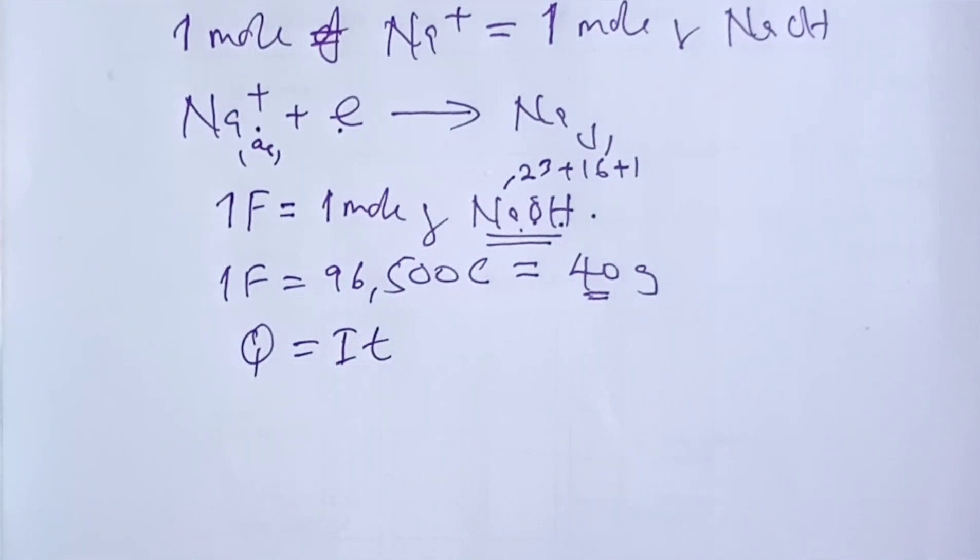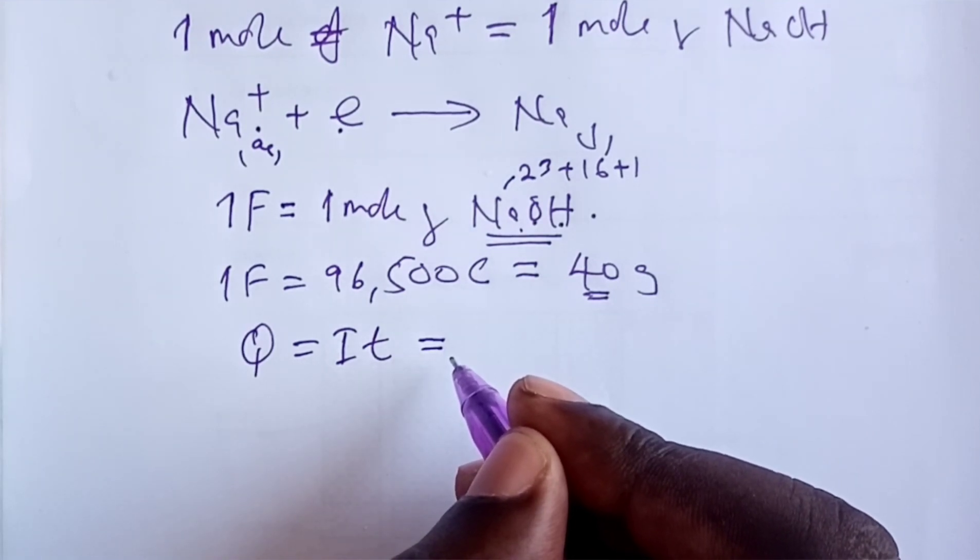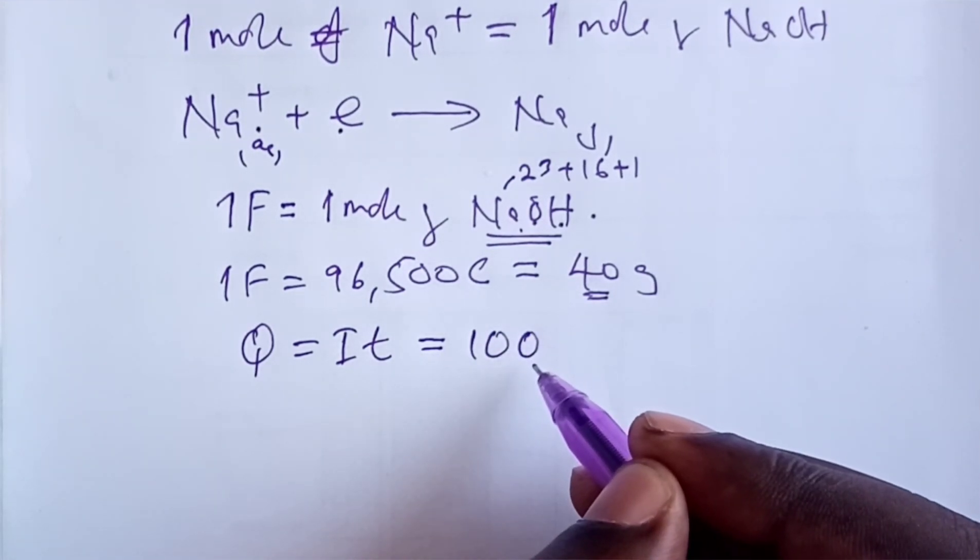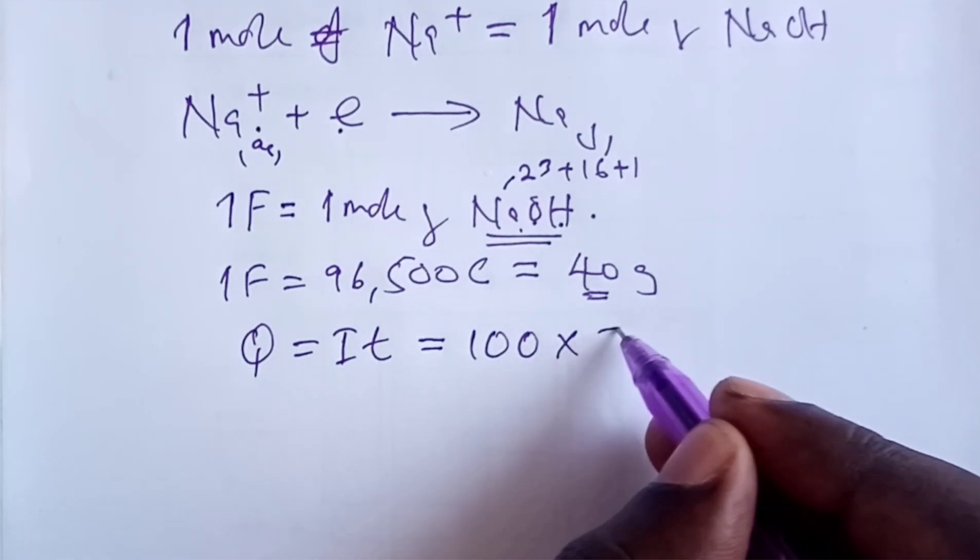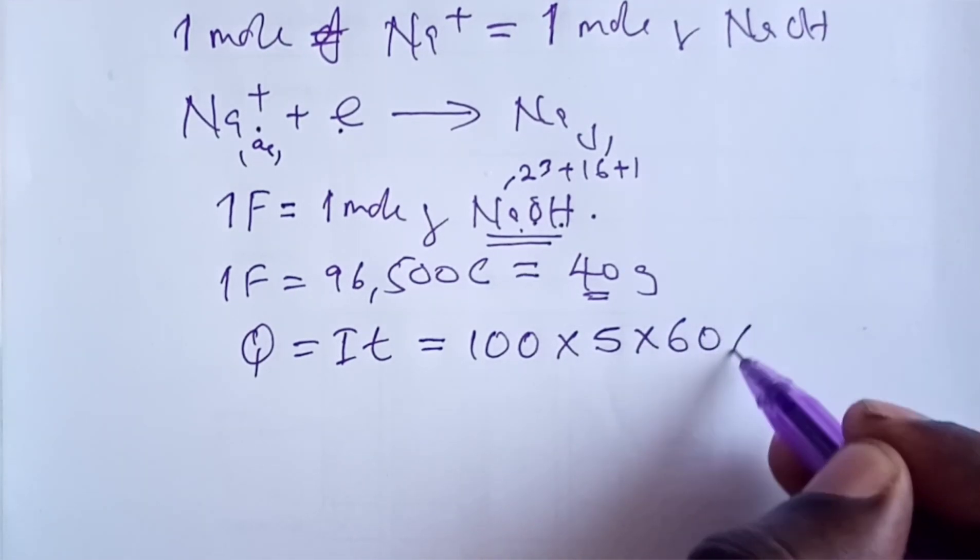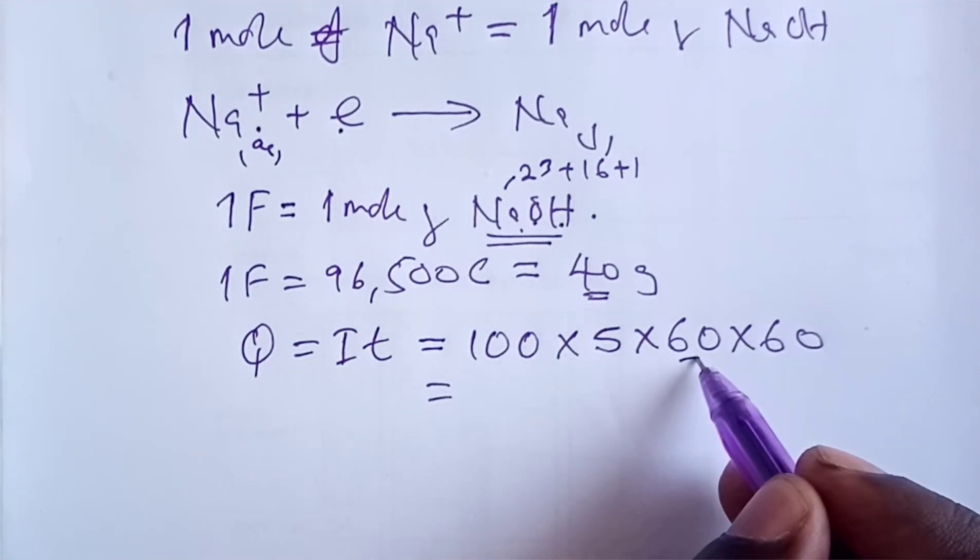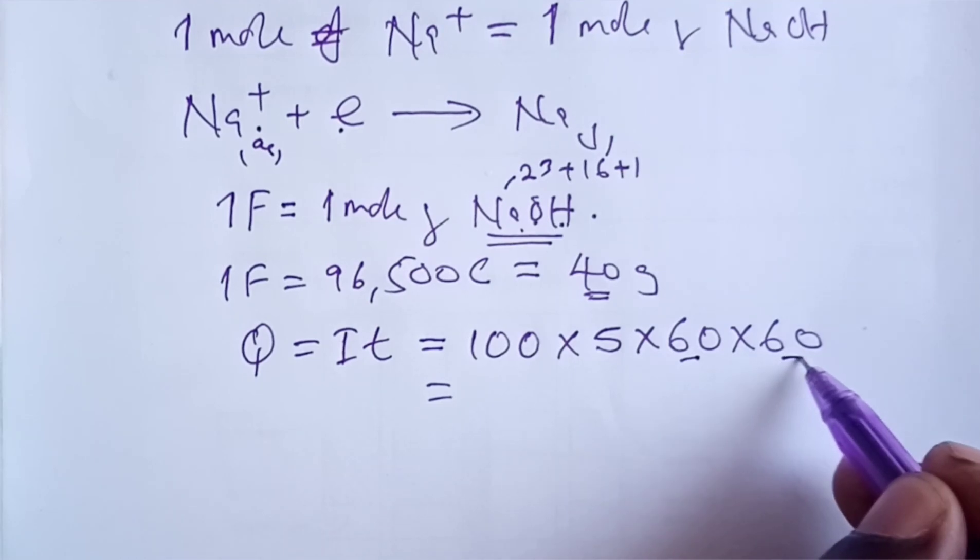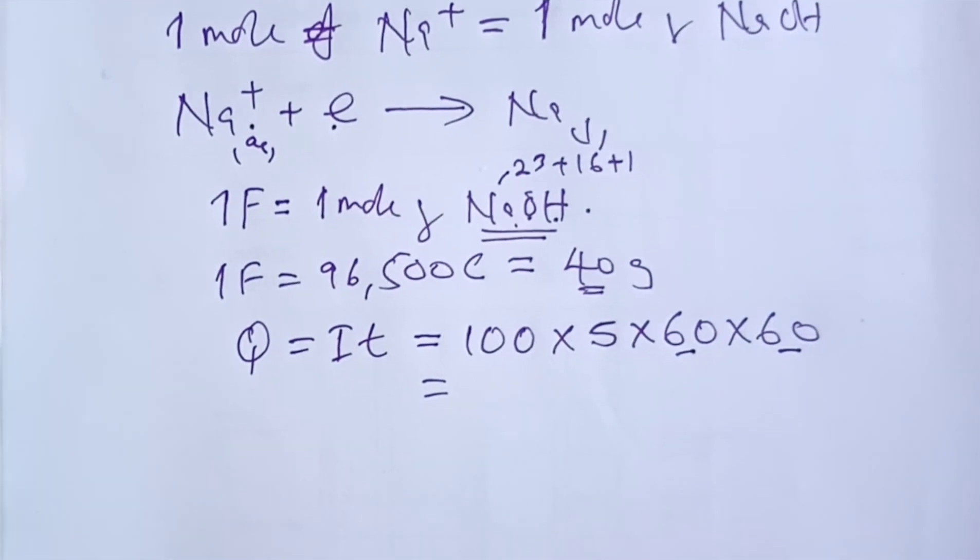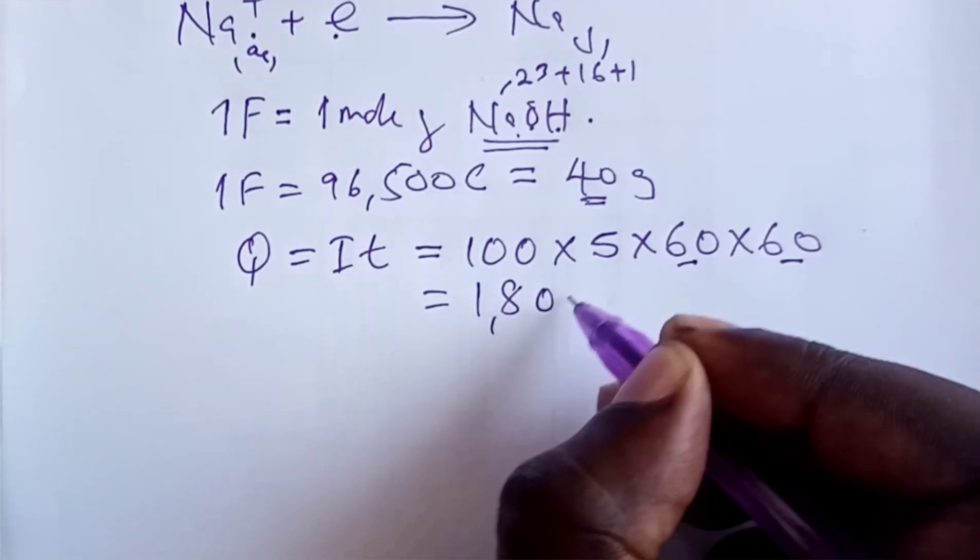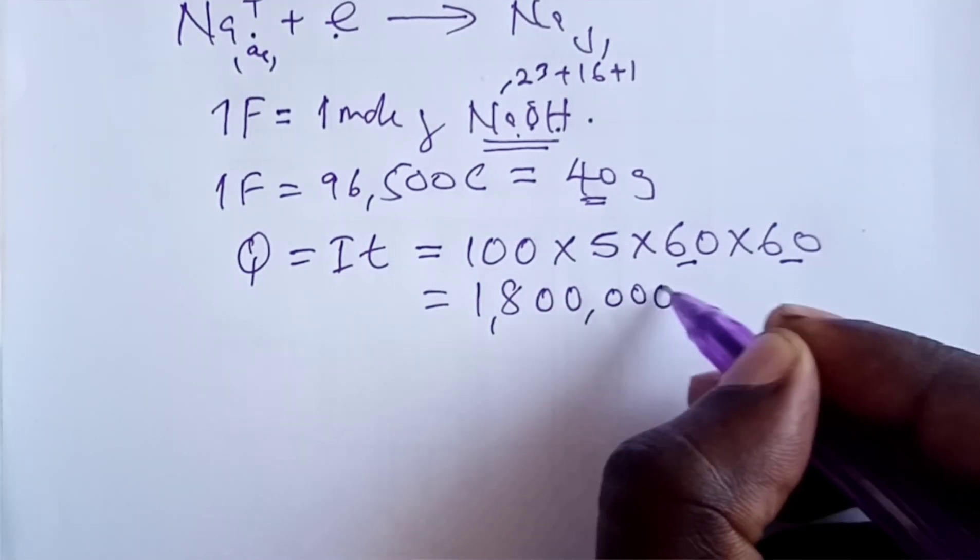Q is normally given by IT, where I is current in amperes and T is time in seconds. My current is 100 amperes, T is 5 hours, which I have to change into seconds by multiplying by 60 to change into minutes, and another 60 to change into seconds. This gives me 1,800,000 coulombs.